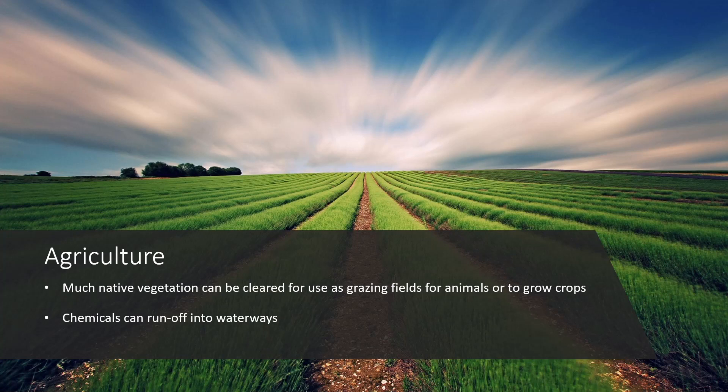Pesticides can harm environments by removing some members of those ecosystems. Fertilizers can also be quite harmful because they promote the growth of things like algae, which can use up a lot of the oxygen in the water, leading to some organisms suffocating and having that effect on the rest of the food web.